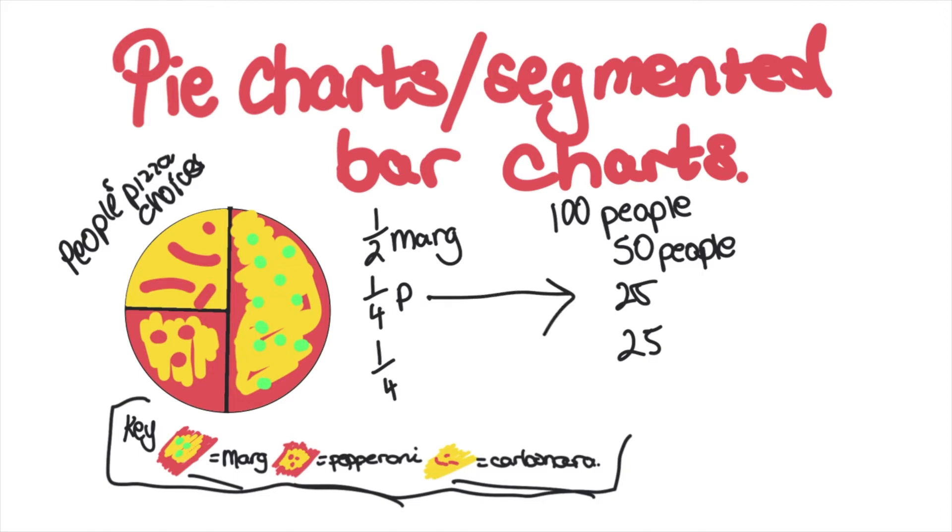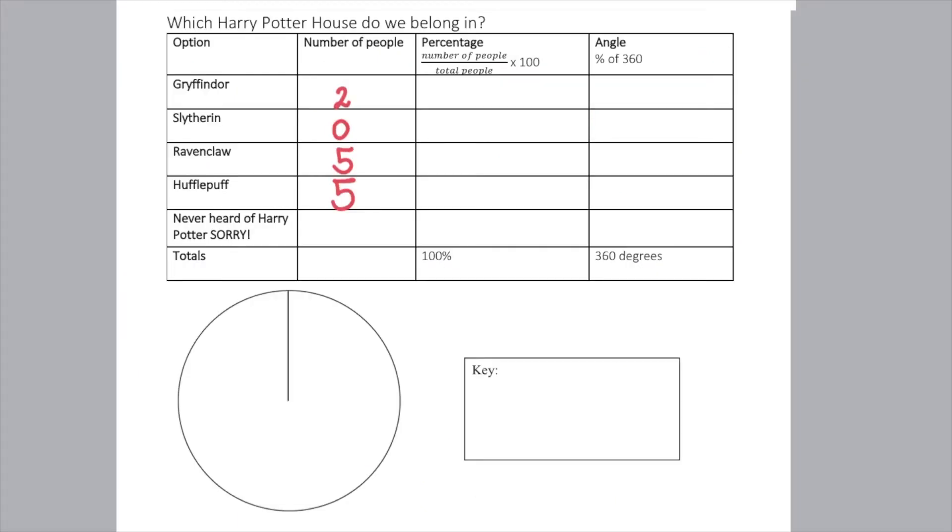Hopefully now you're getting an idea how pie charts are made, what they're showing, and how you can convert from fractions to the amount of people. On this page we're actually going to go the other way around where we've got the data and we are going to make a pie chart. This is actual data from my 2021 year 7 class.